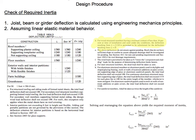Joist, beam, and girder deflection is calculated using engineering mechanics principles, and we assume linear elastic material behavior. Here, this is from the IBC 2009 deflection limits.